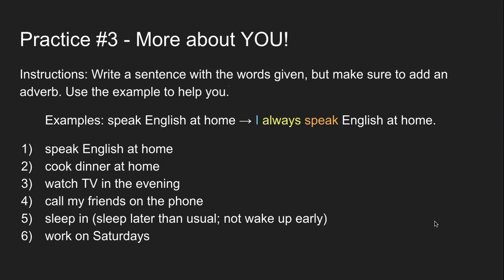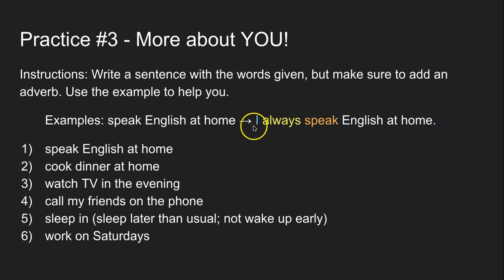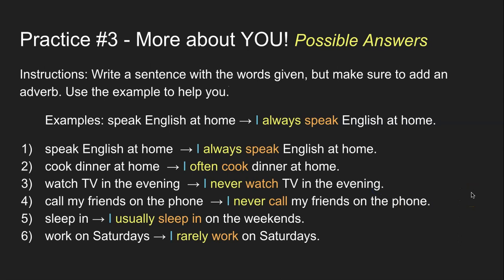One more practice — it's time to write about yourself. You are given words and need to make complete sentences by adding an adverb. For example, if given 'speak English at home,' you make a complete sentence with a subject, an indefinite adverb of frequency, the verb, and your object or prepositional phrase. You have six different sentences to complete. Pause the video and do them now. Here are some possible answers — pause the video here to study them.